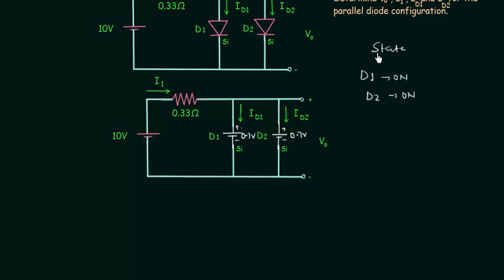So this is what we have after the first step. Now we will move to the second step in which we will determine the value of V0. V0 is simply equal to 0.7V because V0 is measured across the two diodes.